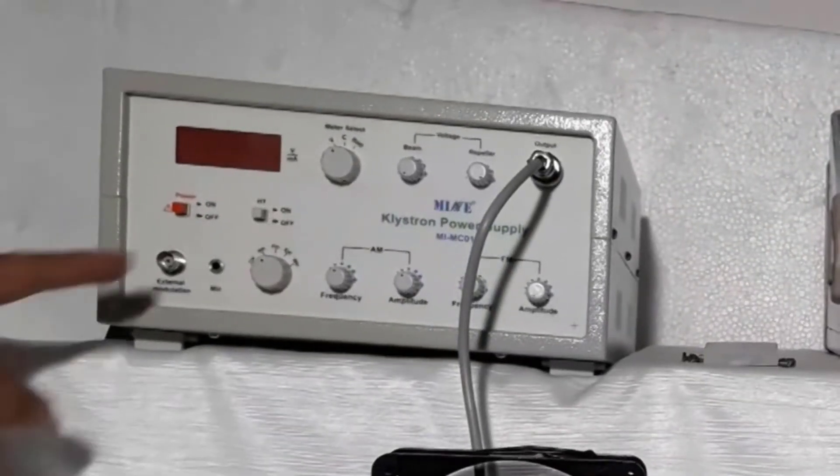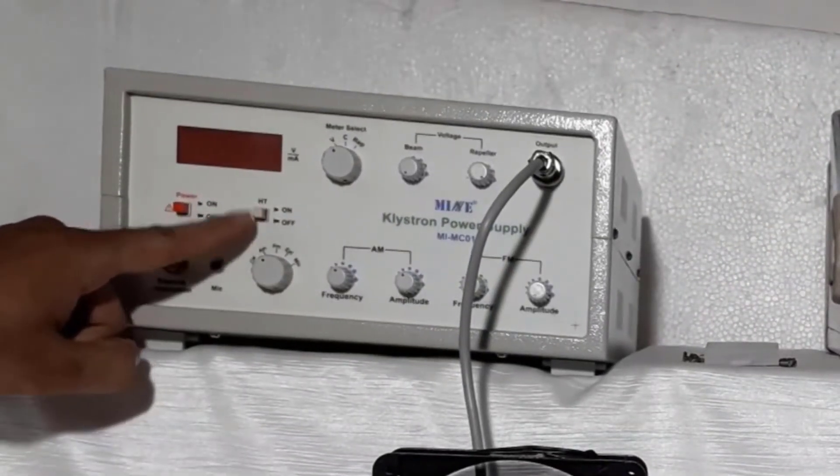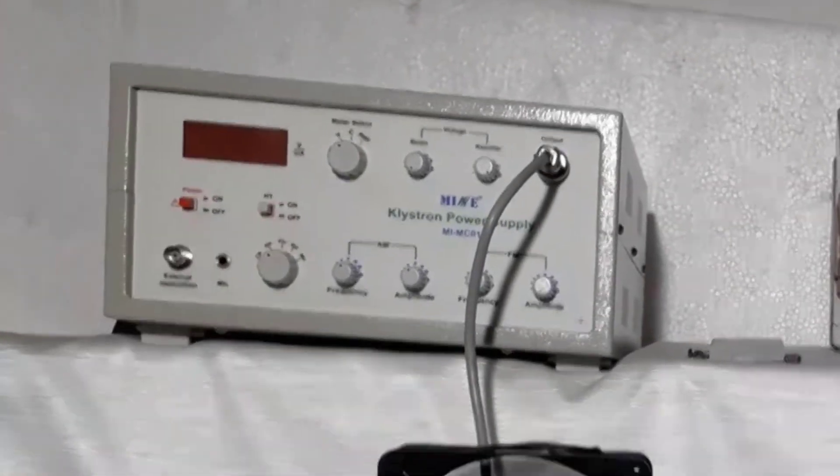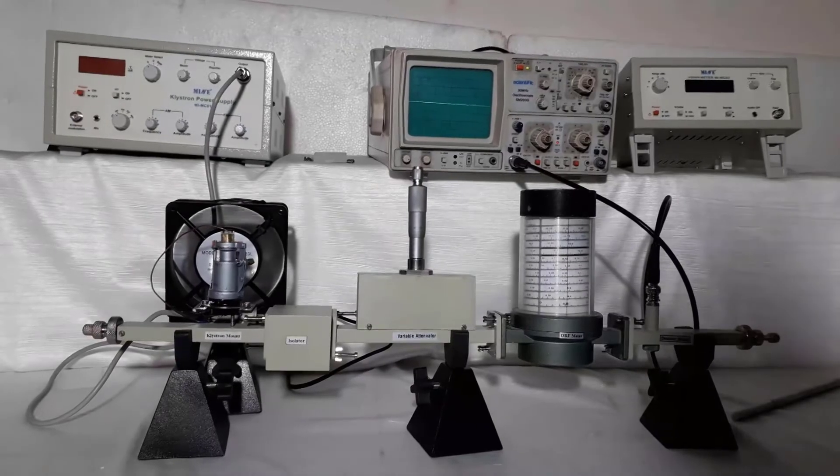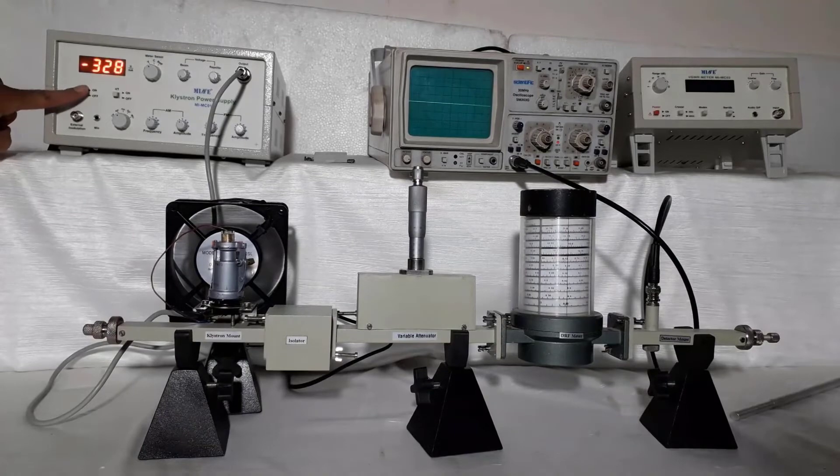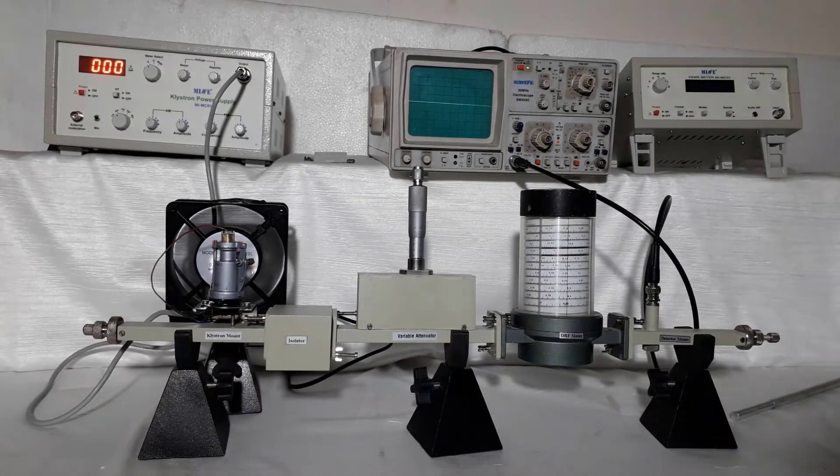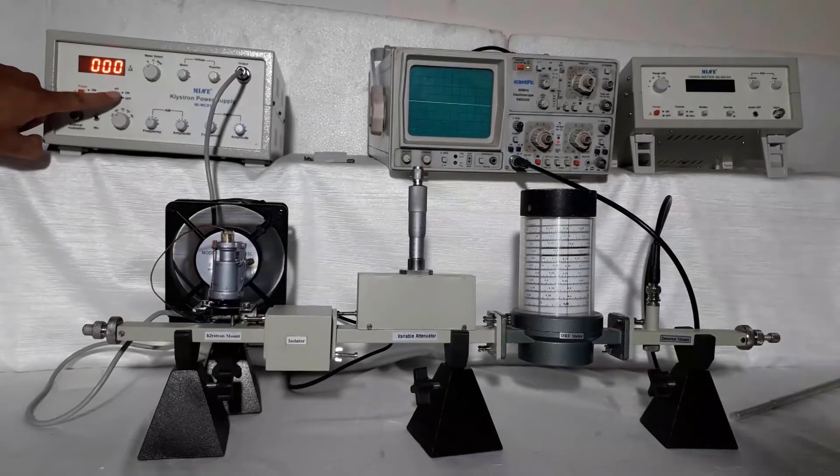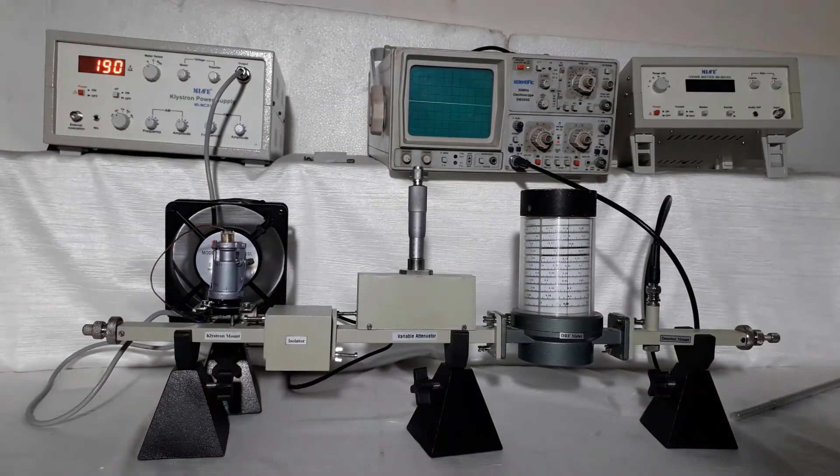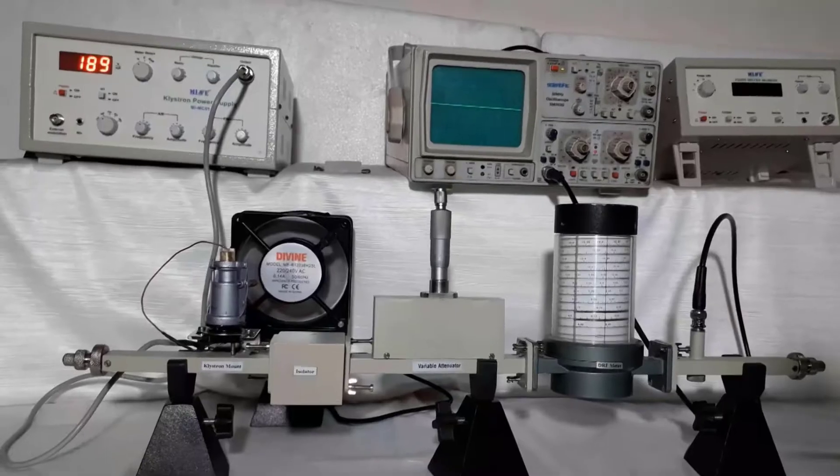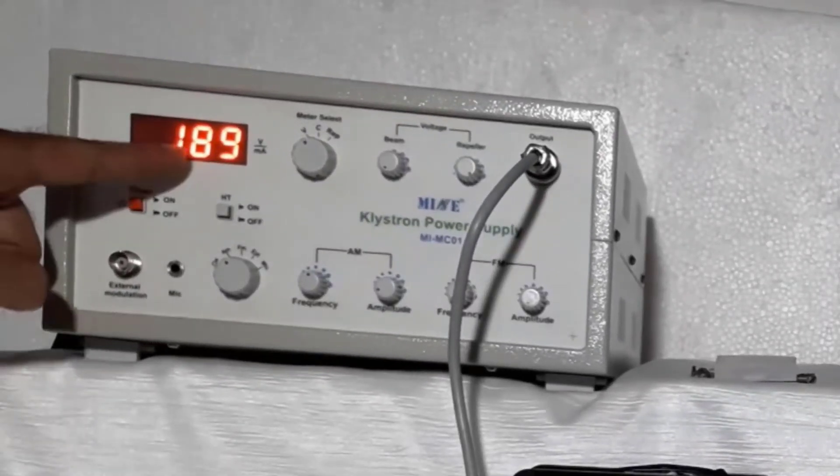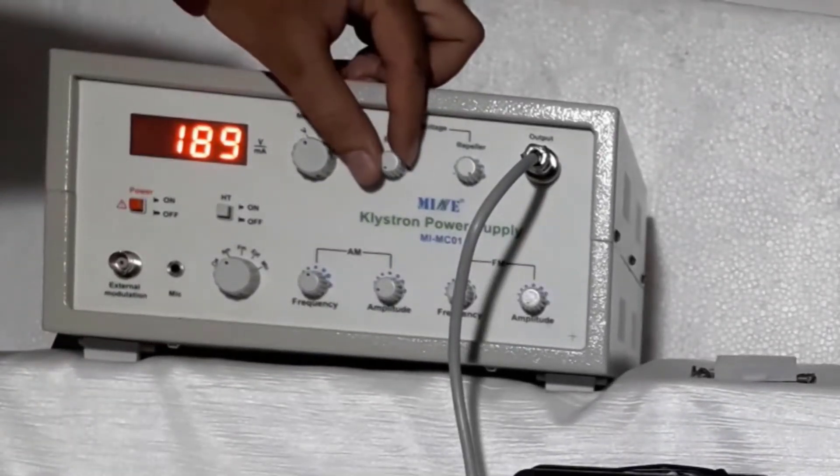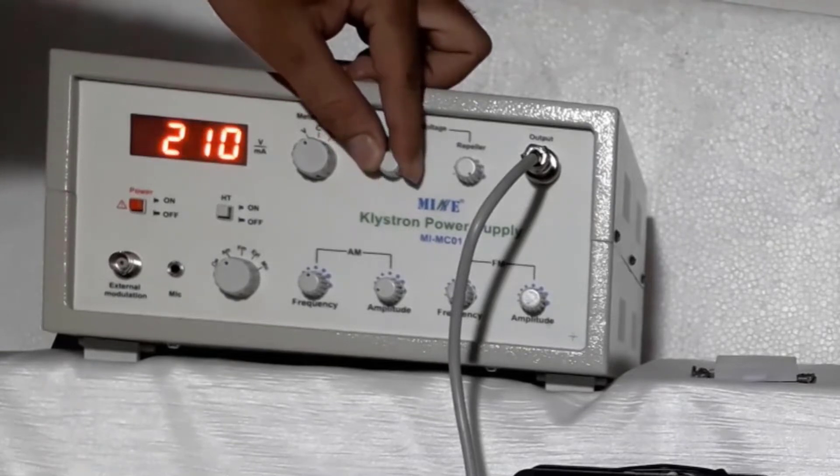Make sure that HT is at off position. Now power on the klystron power supply and CRO. Now keep HT at on position. Now you will see beam voltage at the display meter. Set it up to 220 volts using beam voltage knob.